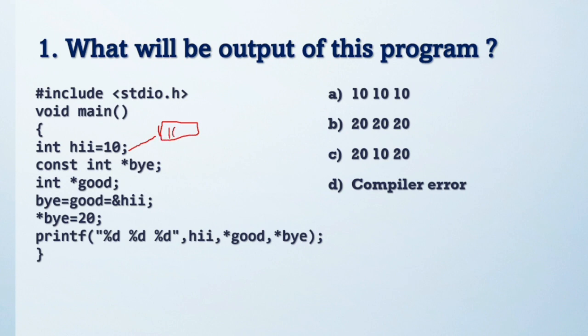This bye is a constant integer pointer, so we don't know what is inside this value. This is an integer pointer good.